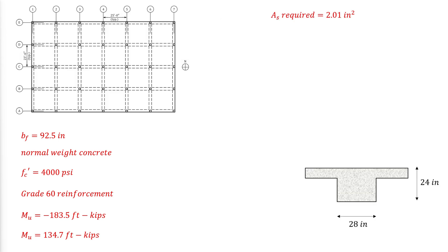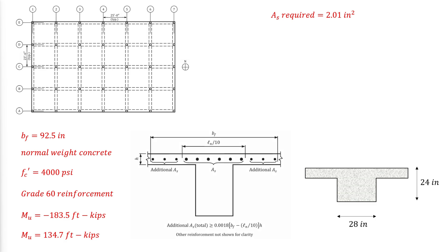To select the reinforcement bars size and numbers, cracking control requirements have to be met. For the top reinforcement, the flexural reinforcement has to be distributed over the lesser length of the effective width BF and LN over 10. Because LN over 10 is less than the effective width and almost equal to the width of the beam, the flexural reinforcement is distributed along the width of the beam. Additional reinforcement outside the width of the beam within the flange should be provided according to the condition at the bottom.